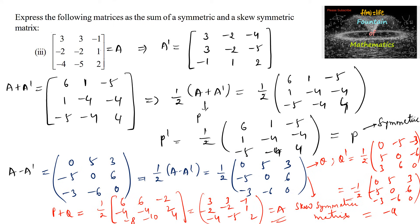Hence we can say that every square matrix can be expressed as the sum of a symmetric and skew symmetric matrix. P is the symmetric matrix and Q is the skew symmetric matrix.